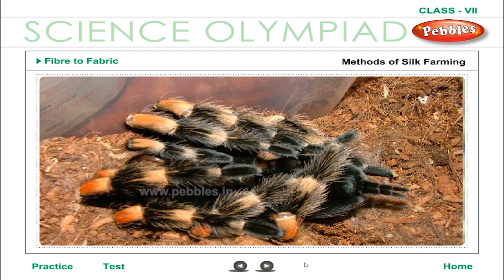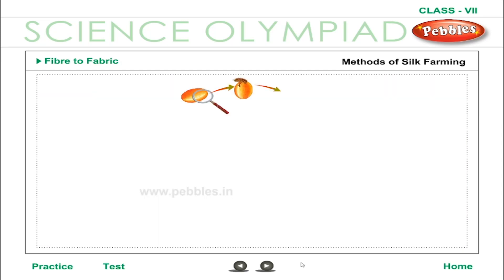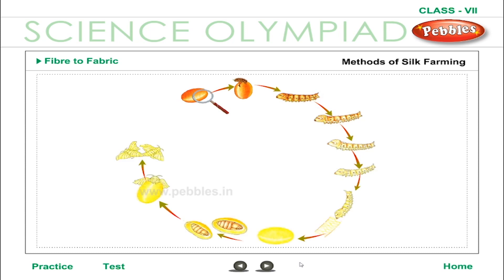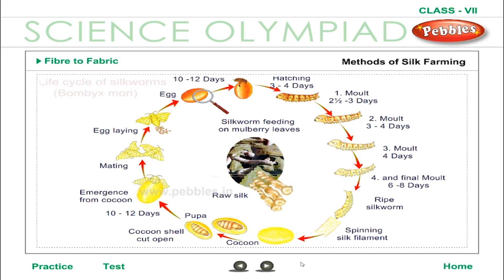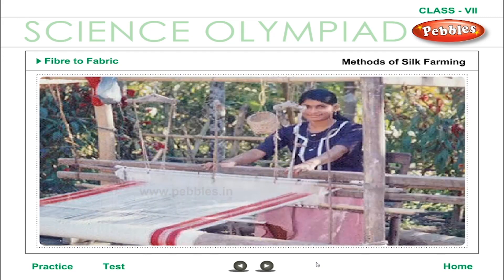Larvae eat voraciously and grow fast. One day they stop eating, climb twigs, and start spinning cocoons. This stage is called the pupa stage. The cocoons are treated with steam so that the pupae are killed and silk threads are collected from the cocoon by a process called reeling, which is done by hand. If cocoons are not steamed, the pupae develop into moths, and when the moth emerges the thread gets damaged.